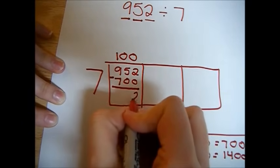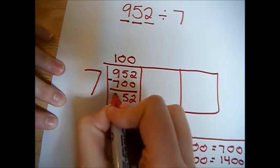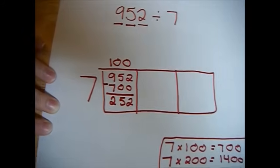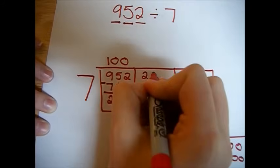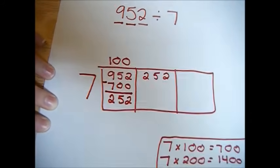And then we subtract, and we get 252, which we move to the second box. Now we do the same thing again, but with numbers in the tens place.